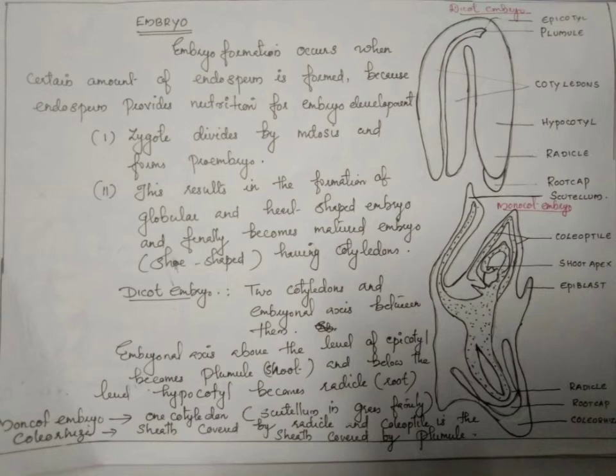In monocot embryo, the radicle on the lower end of the embryonal axis is covered by an undifferentiated sheath called the coleorhiza. The plumule is covered by a sheath called the coleoptile. These are some important terms during embryogenesis.